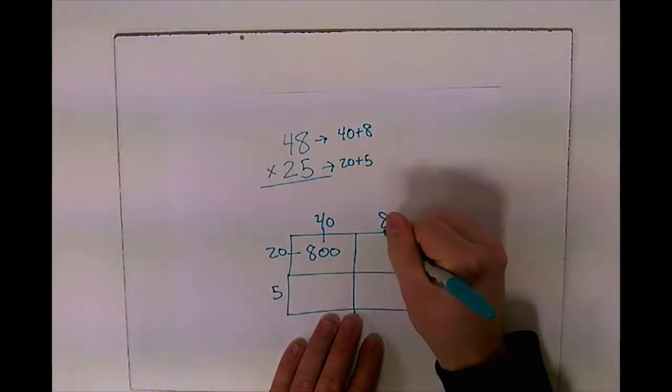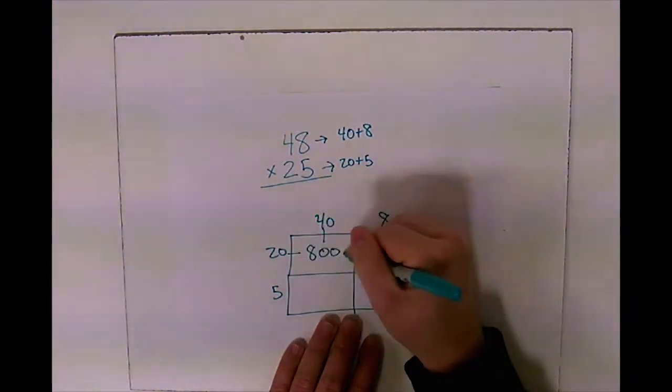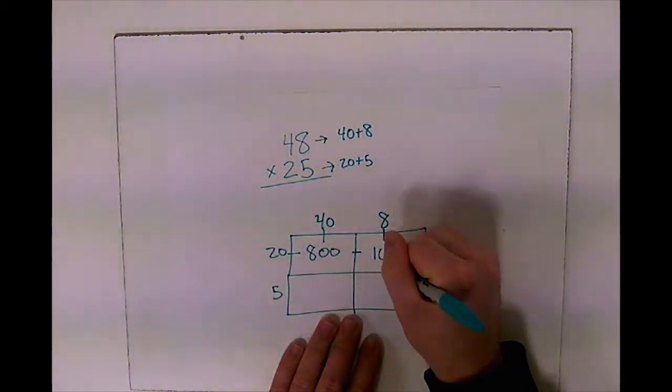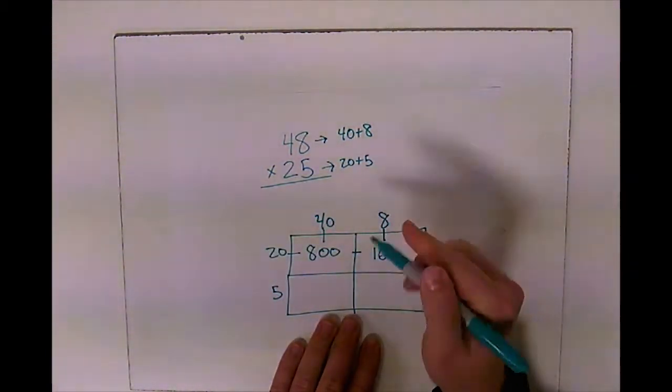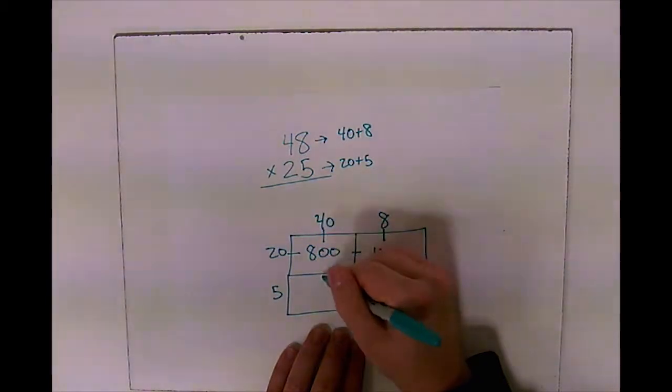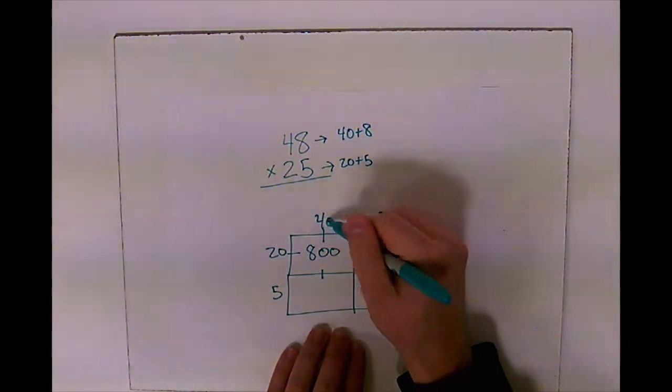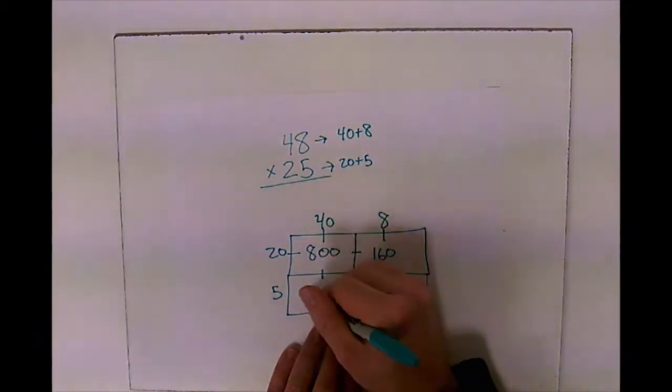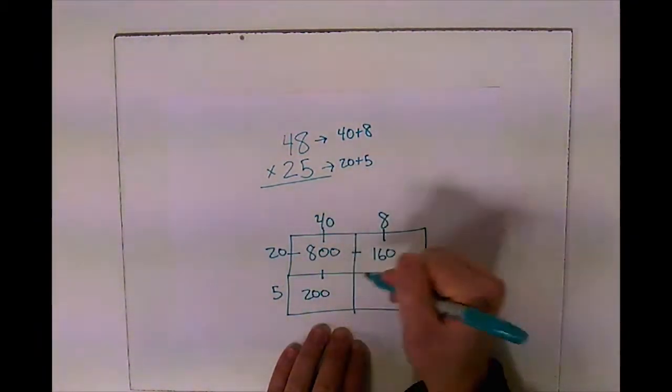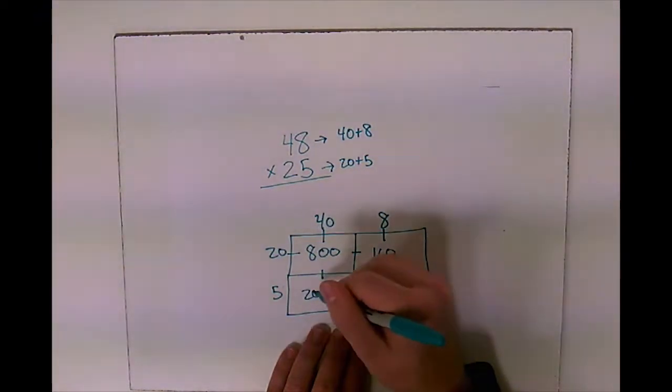This box, above it is 8, to the side is 20. So 8 times 2 is 16, I'm going to add that zero, 160. Above this box is 40—don't use that 800, we've already used it. 40 times 5: 4 times 5 is 20, then add the zero, so it's 200. And then 8 times 5 is 40.